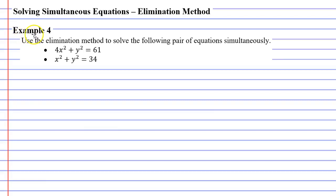In this video we're going to complete example 4. We're going to use the elimination method to solve the following pair of equations simultaneously. So I'm going to start by writing each equation down, one above the other. So 4x² + y² = 61, and then below that x² + y² = 34.